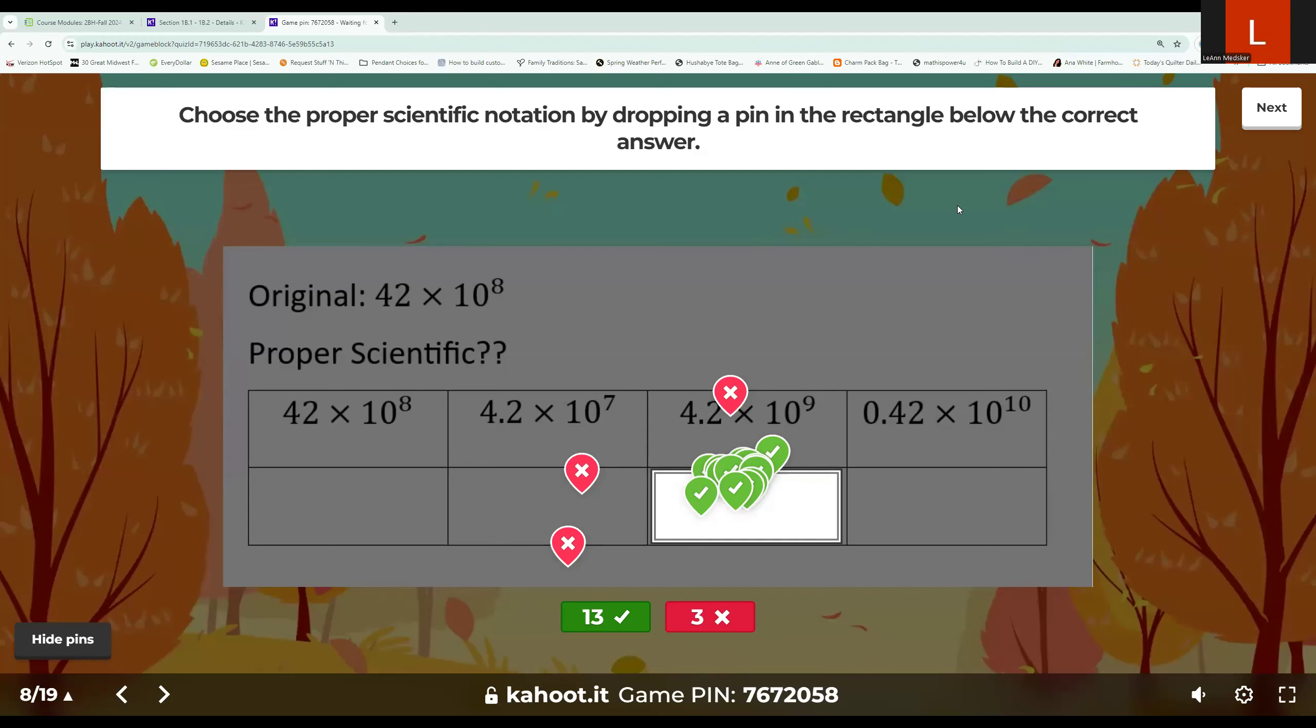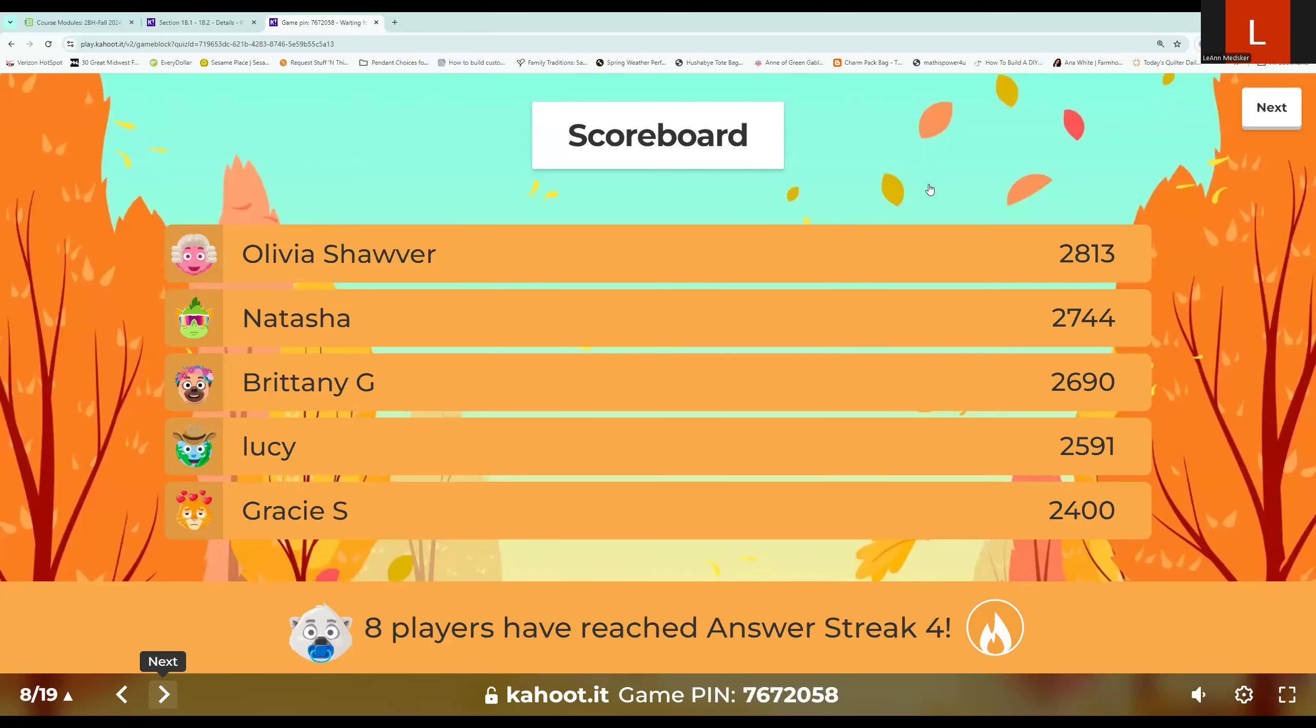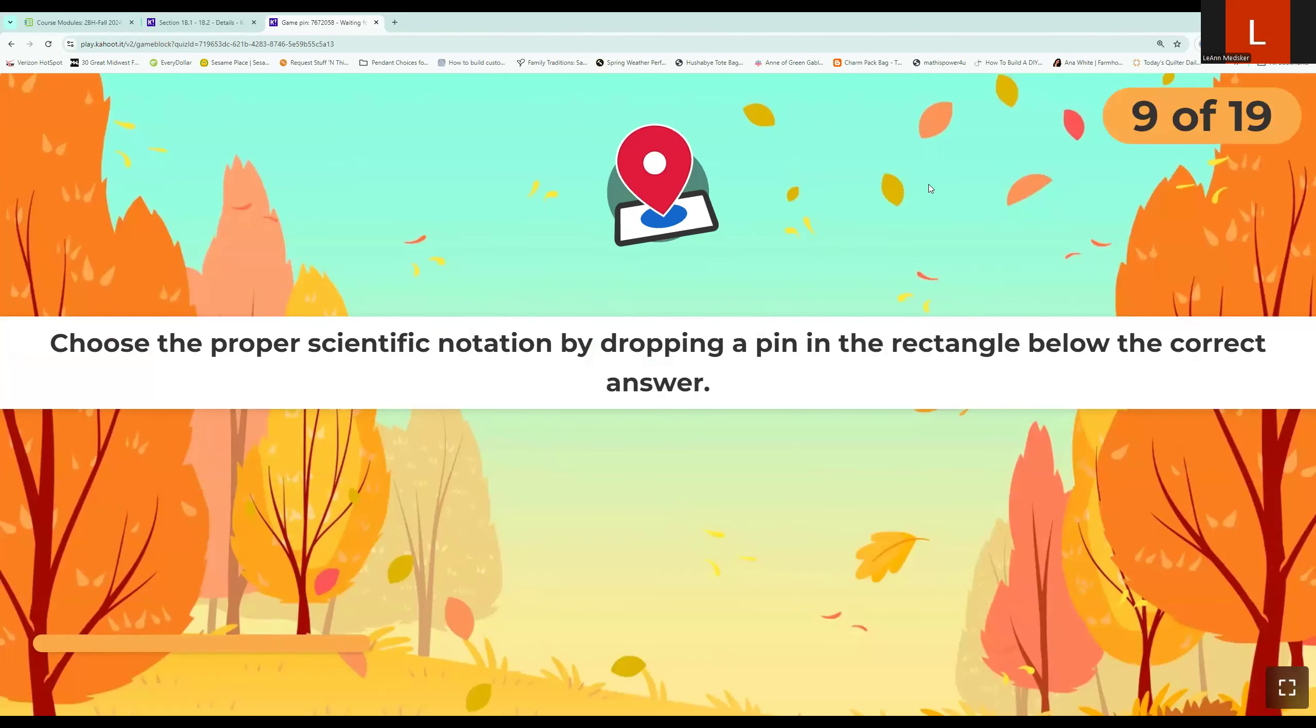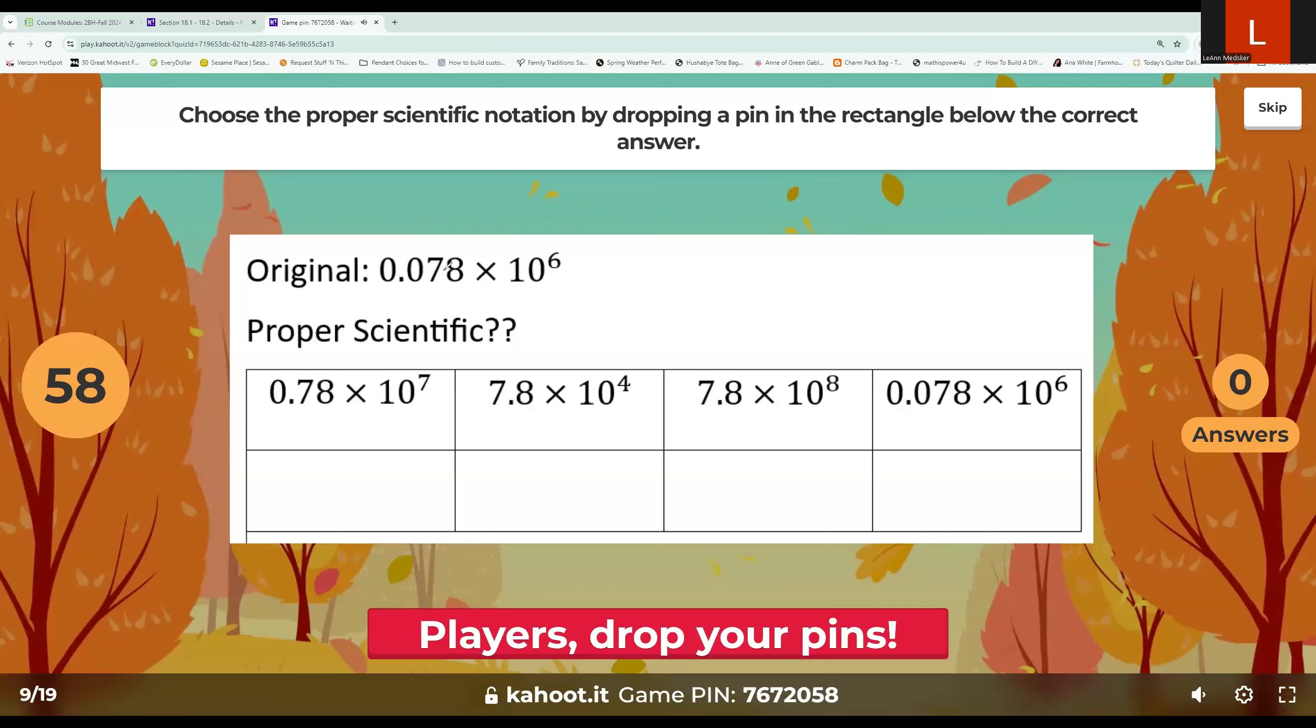All right, so I am finishing up the Kahoot that we were working on for 1b1, 1b2. We had just done this pen problem, so I'm going to just advance to the next problem. So it was another pen one, so we're just going to talk through it together just to make sure we all understand how to do the problem. So we've got this problem right here, 0.078 times 10 to the 6. We want it to be in proper scientific notation.